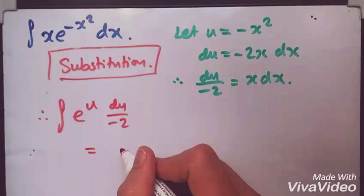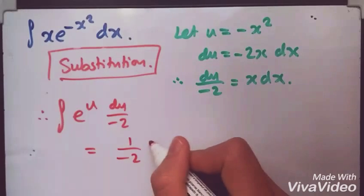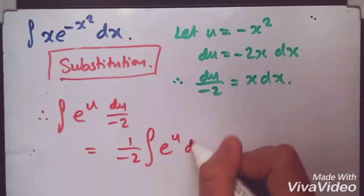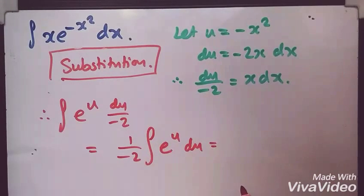Rewrite this to make it better. Take it outside. 1 over minus 2. e to the u du. And hence, this part just becomes du.